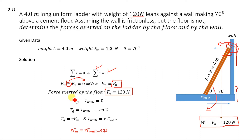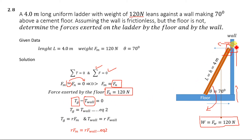We denote the torque due to gravity as T_g and the torque due to the wall as T_wall. Since they are in opposite directions, we have: T_g minus T_wall equals zero, so T_g equals T_wall. The torque is given by τ = r × F. Since we are working with perpendicular moment arms (90 degrees), the torque simplifies to τ = r · F.